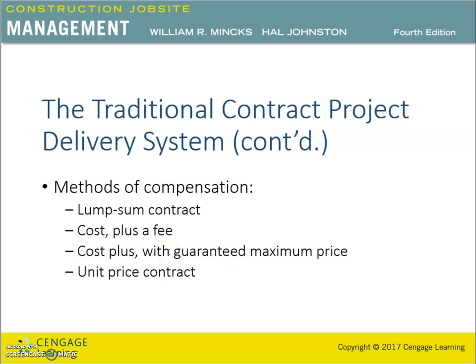Another method is cost plus with a guaranteed maximum price, which is a variation of the cost plus fee method. This is a hybrid of lump sum and cost plus contracts, commonly referred to as the guaranteed maximum price or GMP. The contractor quotes a maximum price for the scope of work and proceeds on a cost plus fee basis, often with an arrangement to split any savings between the contractor and the owner.